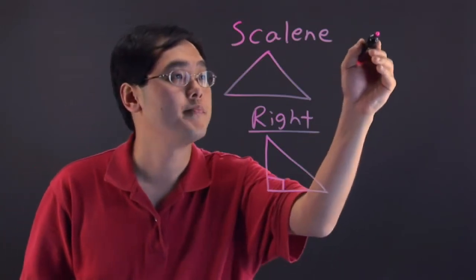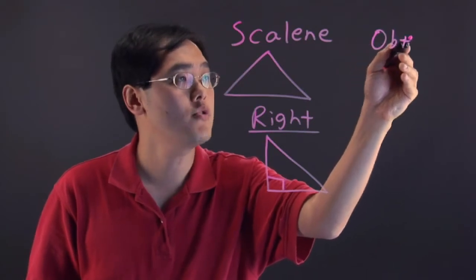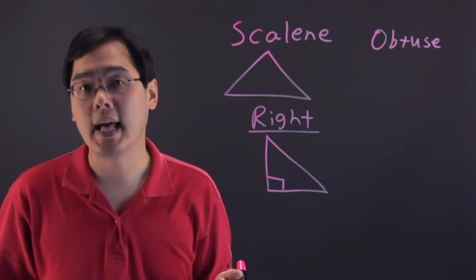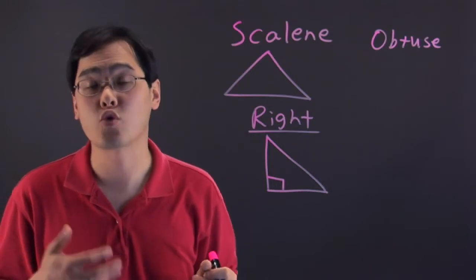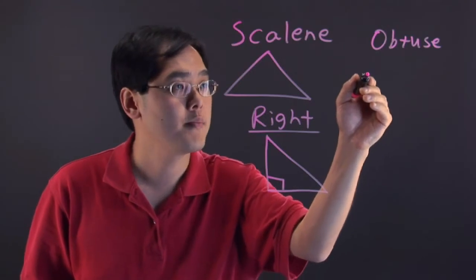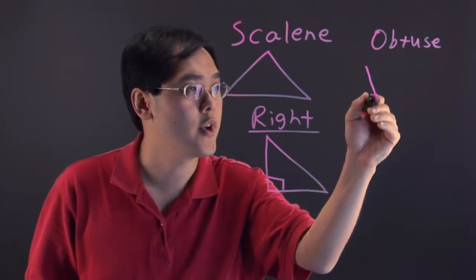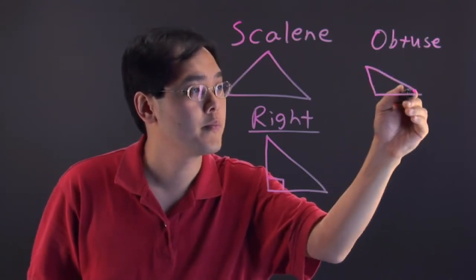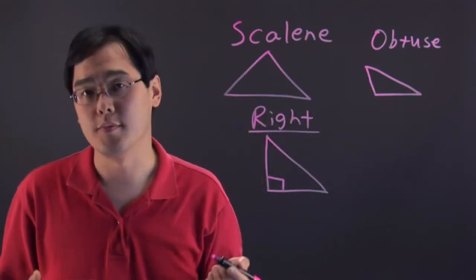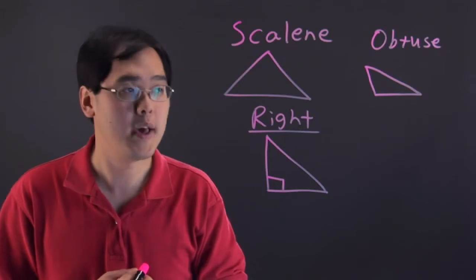And last but not least we have an obtuse triangle, which means that this triangle has an obtuse angle which is an angle that's greater than 90 but less than 180 degrees. Now often times you're going to have a situation where the angle is going to veer out a little bit, indicating the obtuse nature of that particular angle.